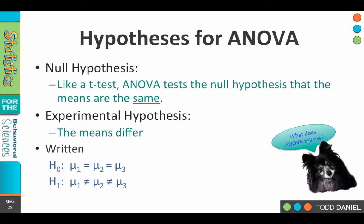In practice, many times we go into our analysis using ANOVA with some idea about which groups should be different from which other groups, and sometimes we'll use what are called planned contrasts. For example, we might say we expect that μ₁ will equal μ₂, but both of them will be less than μ₃. This gives us greater control and tells us something much more interesting about our data.